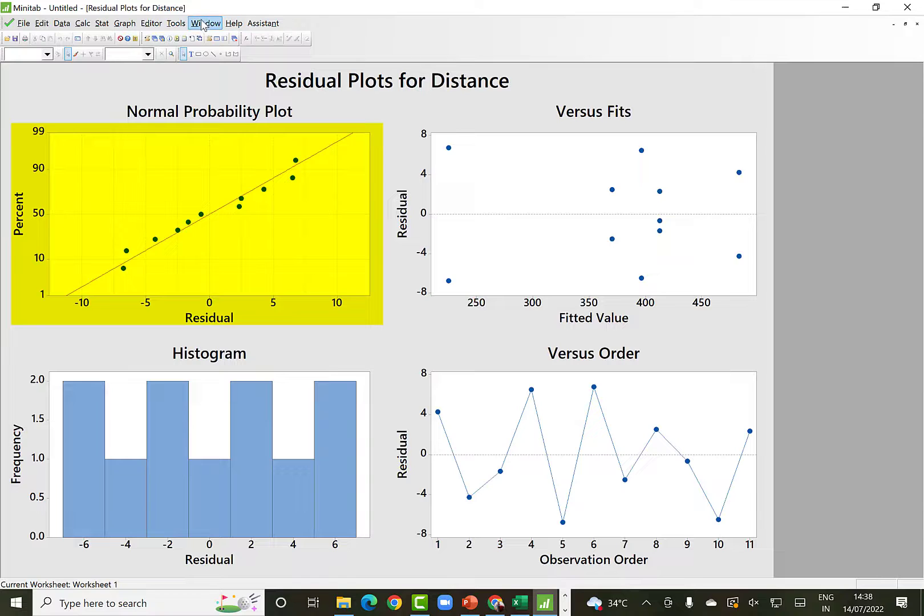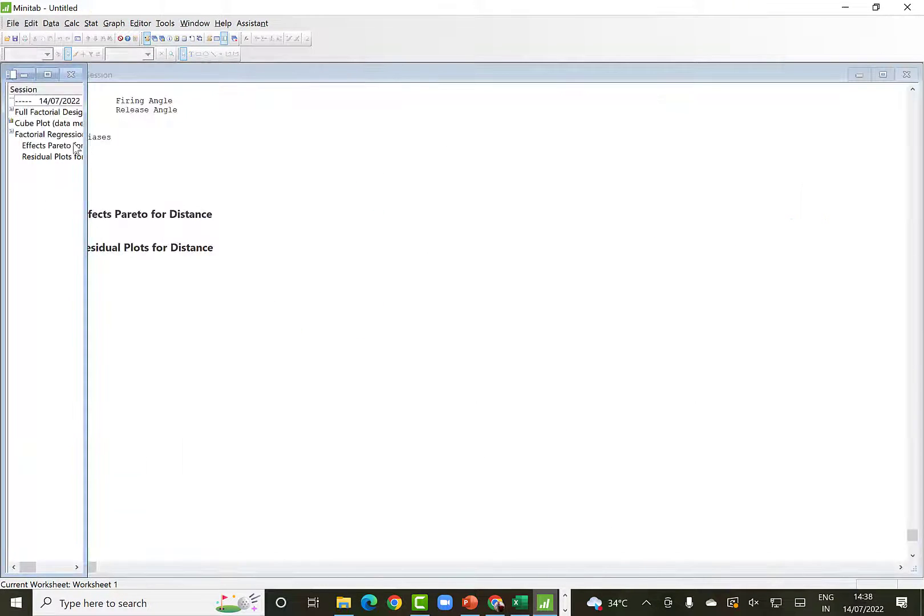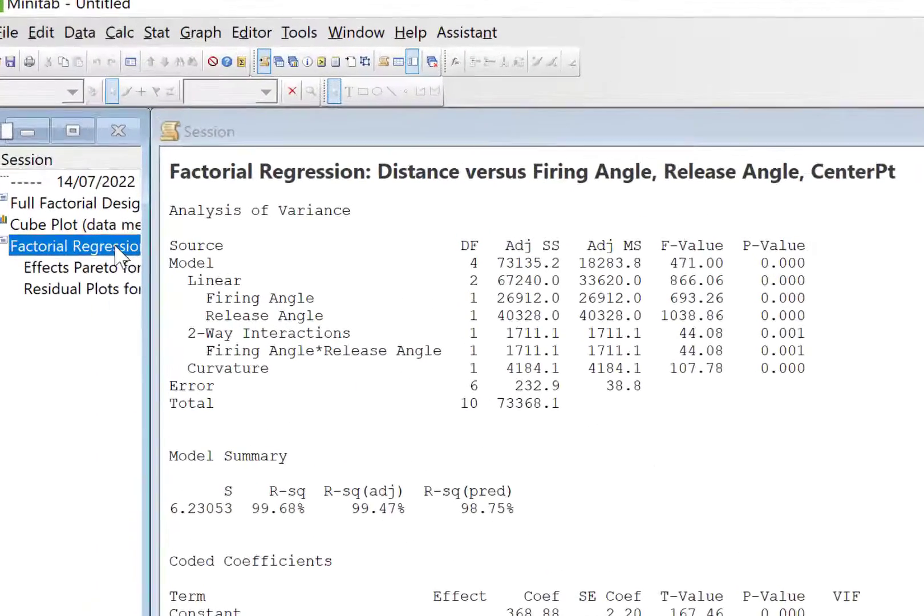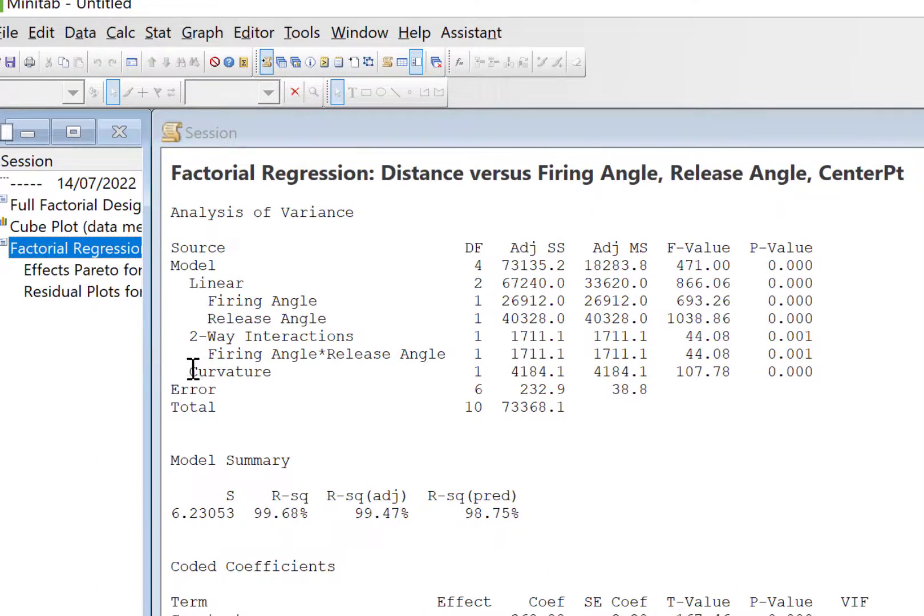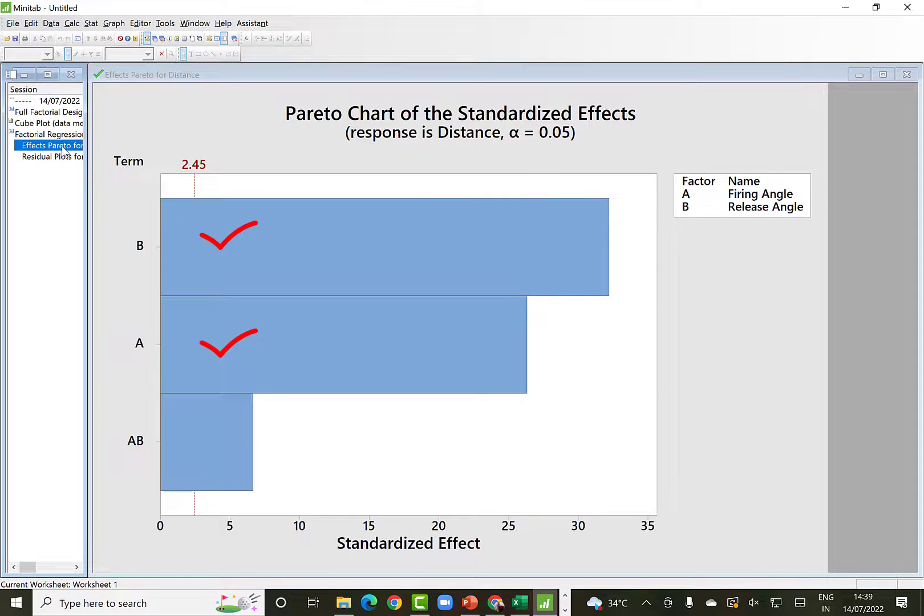The residuals can be seen as normally distributed and evenly distributed in the versus fit. And in the ANOVA table, we can see that the curvature is significant with the p-value of 0.00. And you can see that the R square values are good. And in the Pareto chart of effects, we can see that all B, A and AB are significant.